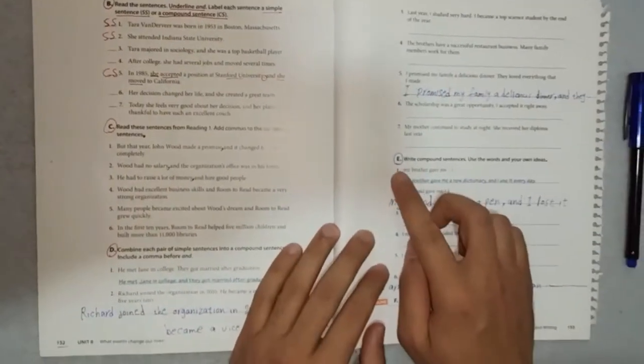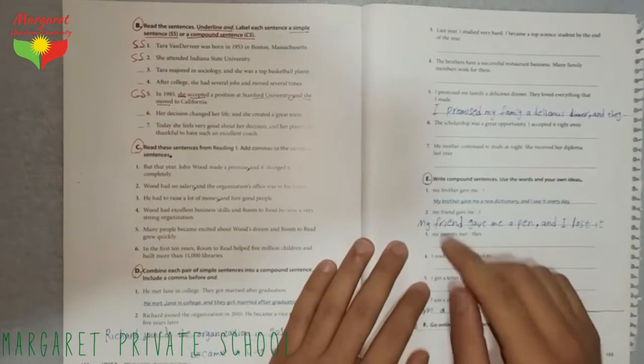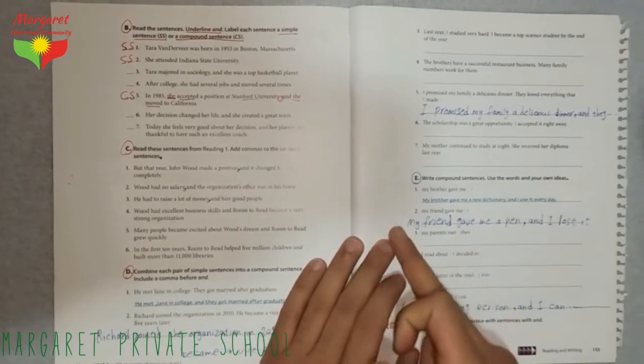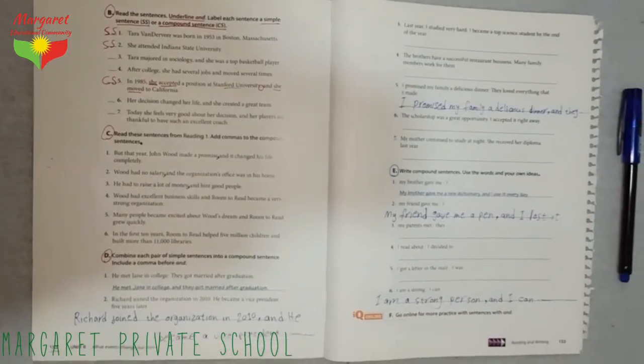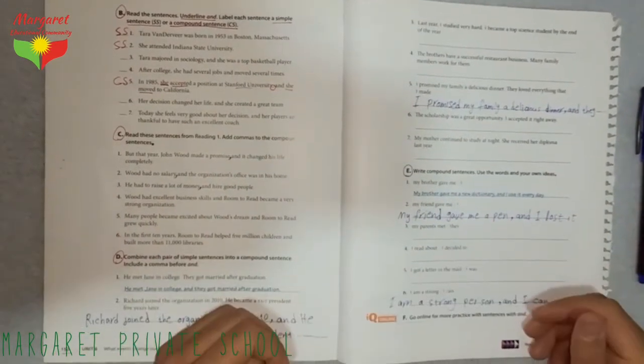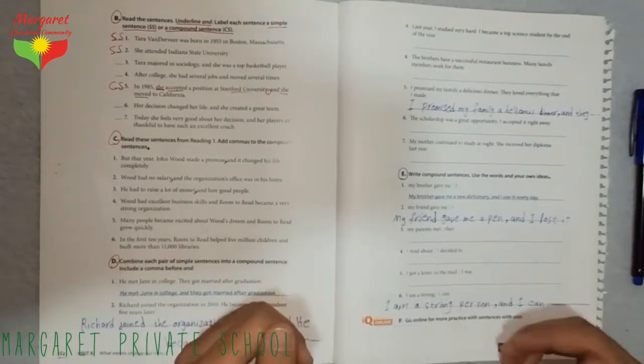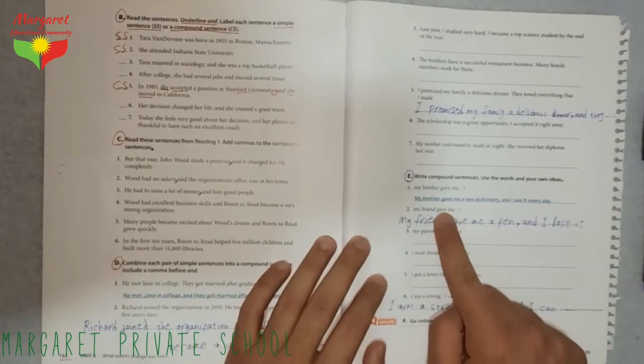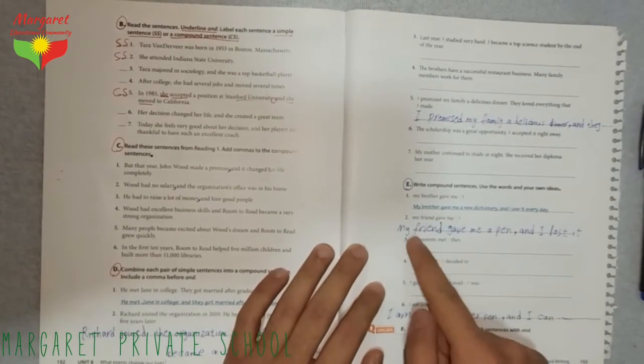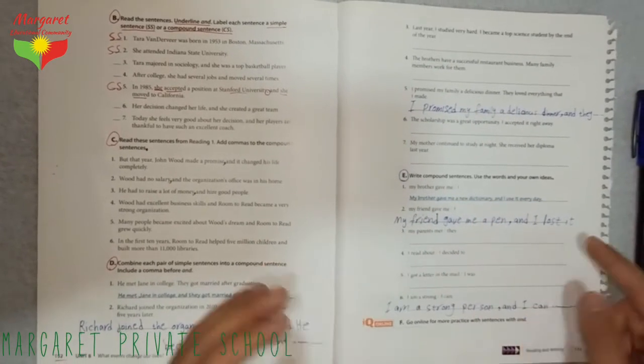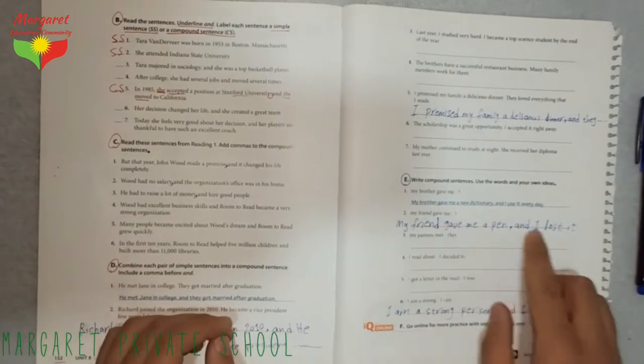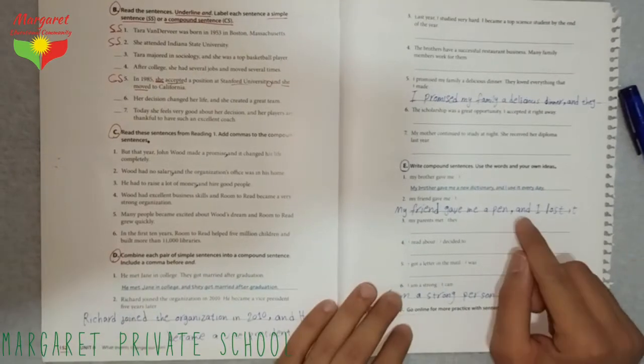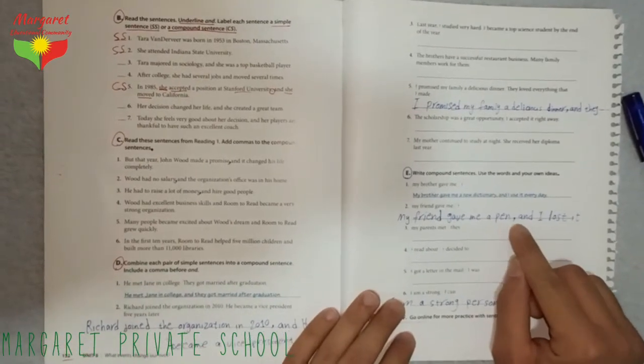In activity E, we write compound sentences. Use the words, these words, and your own ideas. This is up to you how to finish the sentence. Number one is done. Look at number two. My friend gave me a pen, you can add something. For example, my friend gave me a pen and I lost it. This is how you do it. But you have to add 'and' and the comma. Do not forget these two.